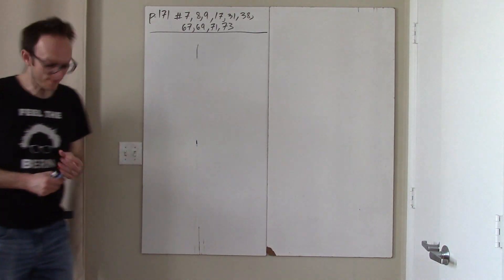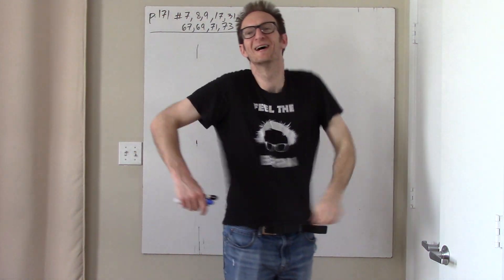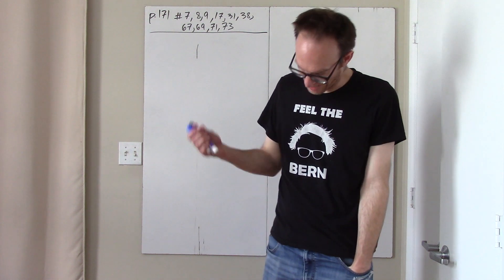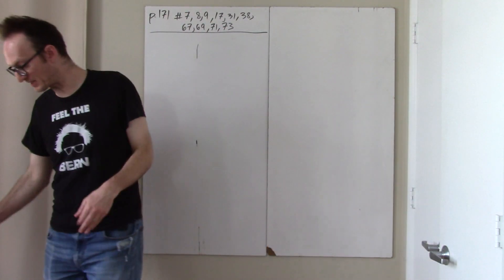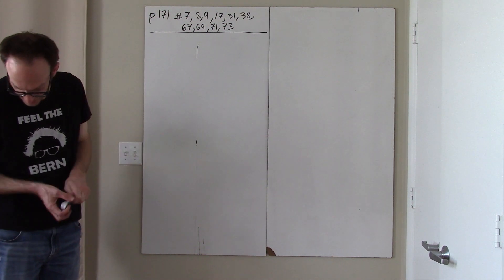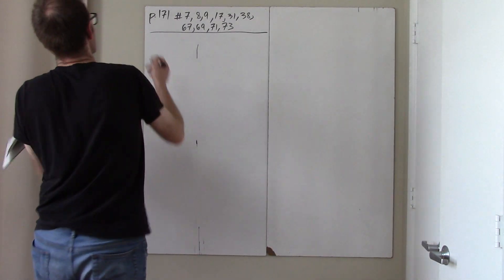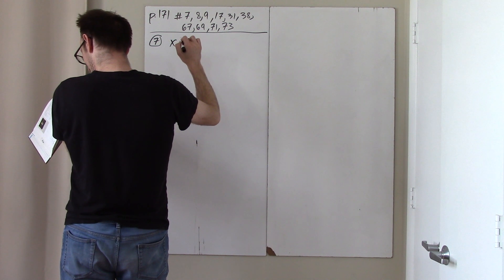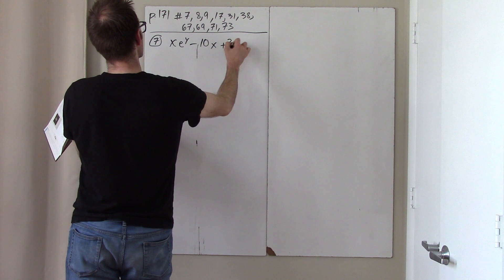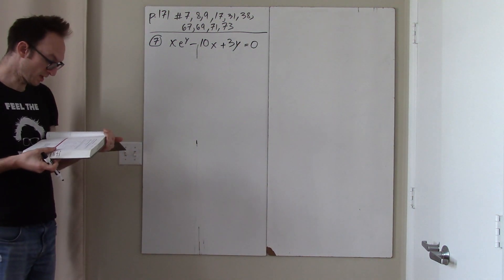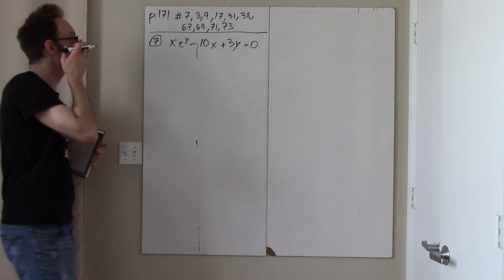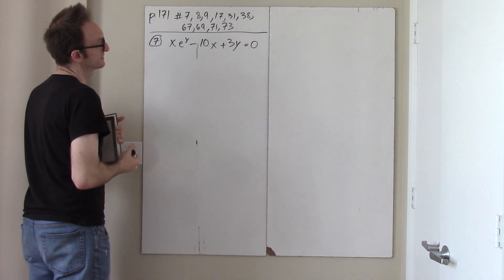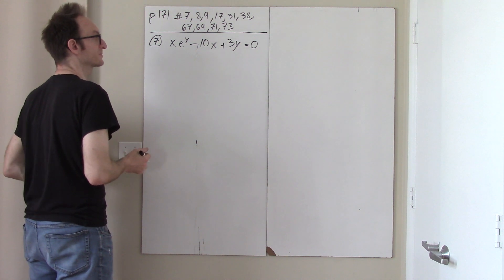We're back. Hopefully you are going through all these homework problems and doing them all. We are now going to do some problems on implicit differentiation. This is something we learned very briefly in the video that bridges the last day of school, so hopefully you watched that video. Here's me just going to do all the homework. Let's go. Number 7: this is xe^y minus 10x plus 3y equals 0. Goal: find dy/dx. We should just differentiate both sides with respect to x.